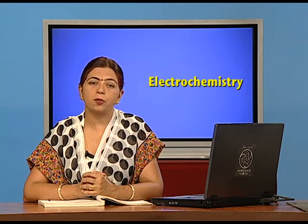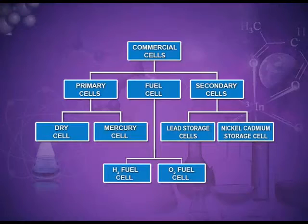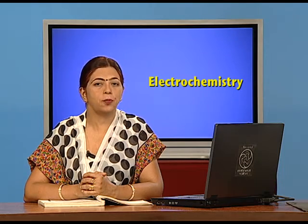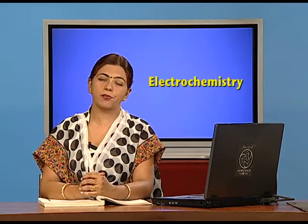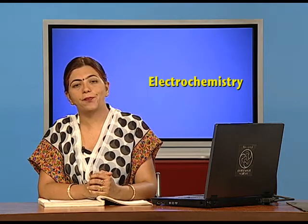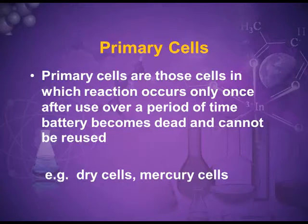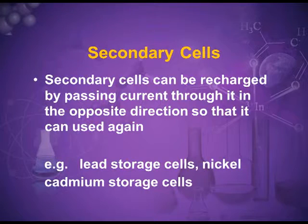Commercial cells are classified as primary cells and secondary cells, with a third category being fuel cells. Primary batteries, once used up, are wasted and must be thrown away — they cannot be recharged. Secondary batteries are rechargeable; by applying an external electric current they can be recharged and used again and again. For example, the battery used in an inverter can be recharged.